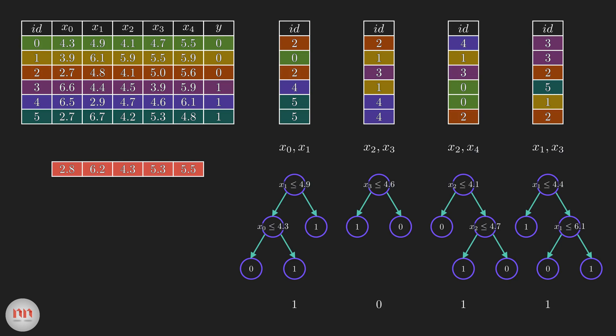This process of combining results from multiple models is called aggregation. So in the random forest, we first perform bootstrapping, then aggregation. And in the jargon, it's called bagging.